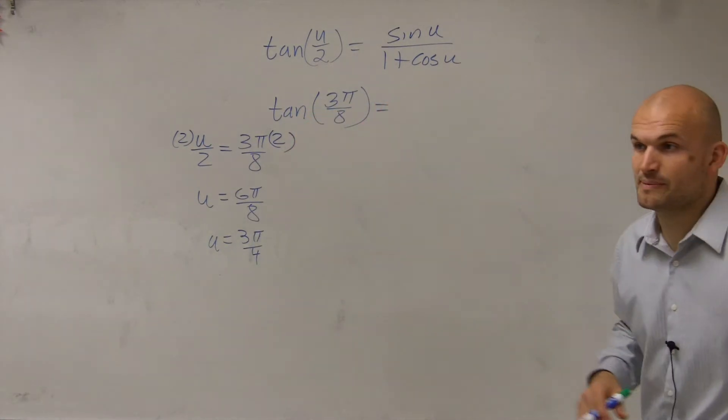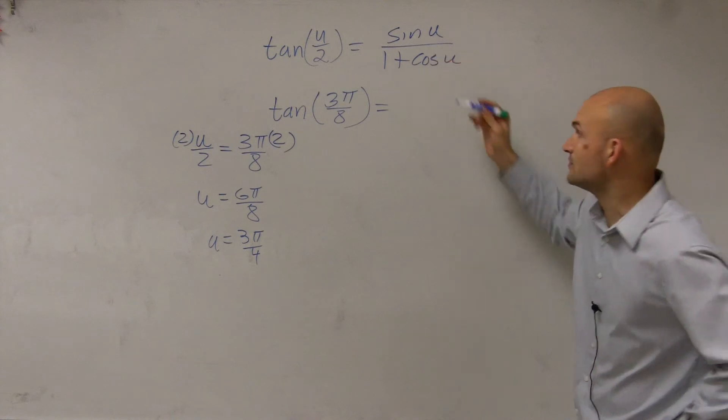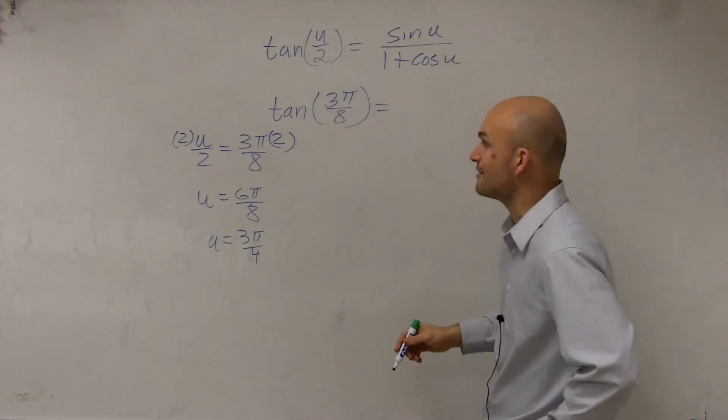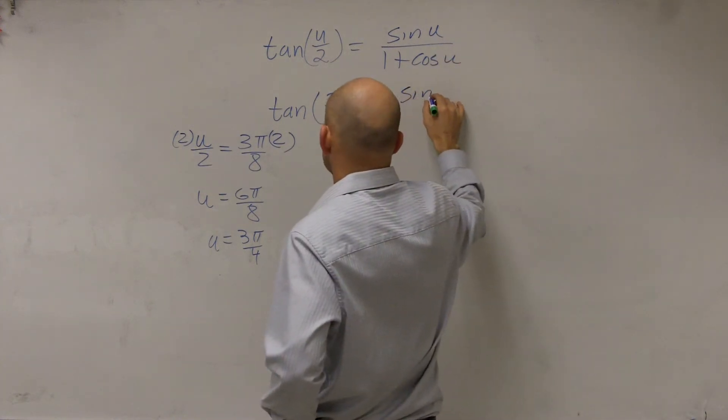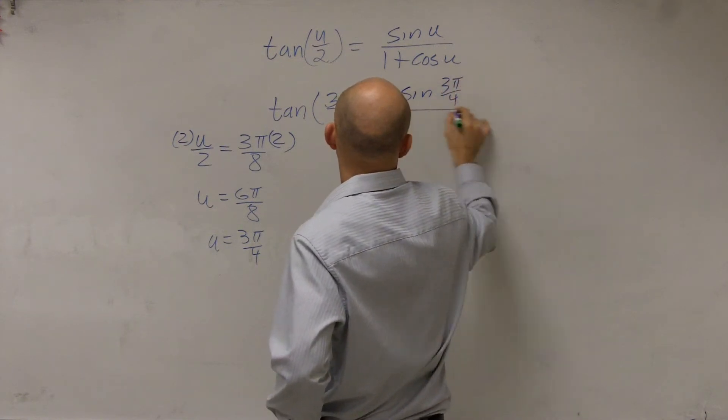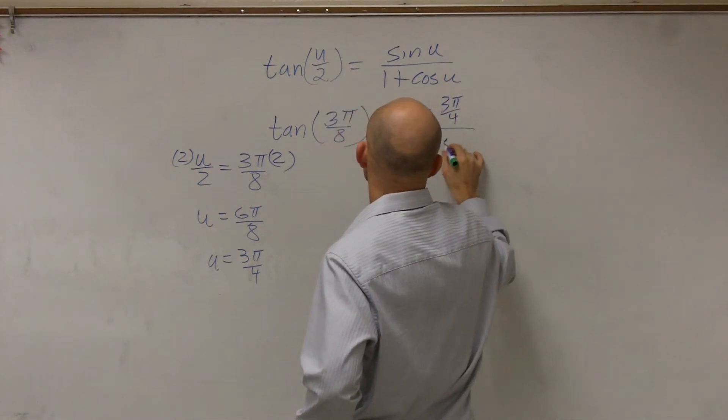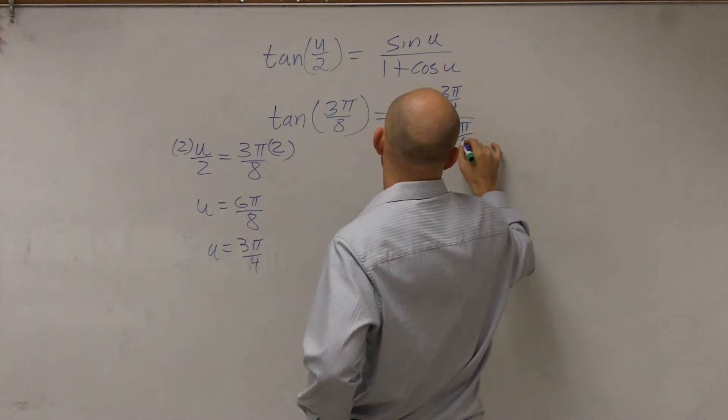All right, so now we know u. We can say that the tangent of 3 pi over 8 is equal to the sine of 3 pi over 4 divided by 1 plus the cosine of 3 pi over 4. Does that kind of make sense, what I did?